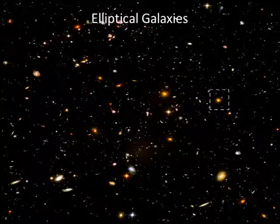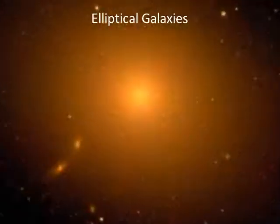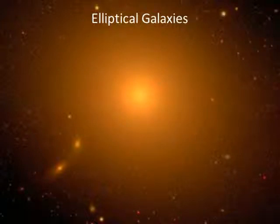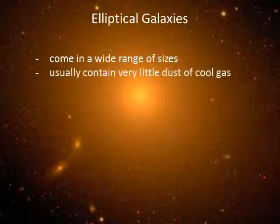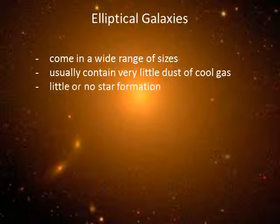Elliptical galaxies differ from spiral galaxies primarily in that they have only a spheroidal component and lack a significant disk component. Elliptical galaxies come in a wide range of sizes, from the rare giant ellipticals to the dwarf ellipticals, which often have fewer than a billion stars. Elliptical galaxies contain very little dust or cool gas, therefore there is little or no star formation within ellipticals.